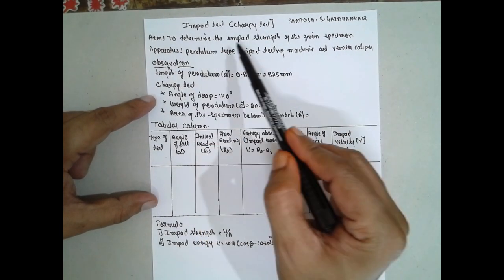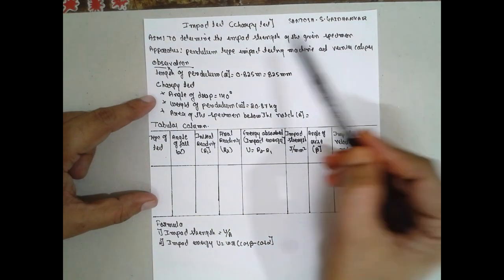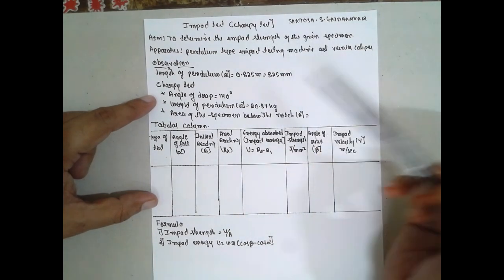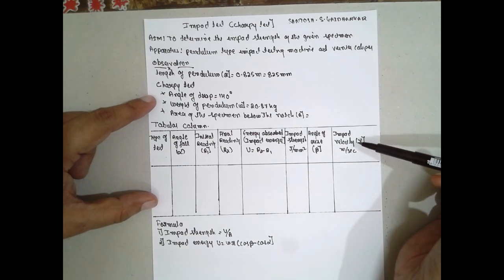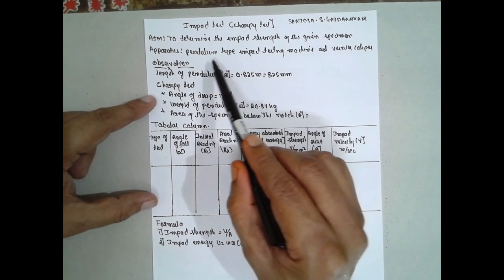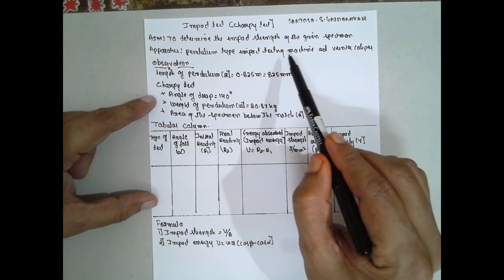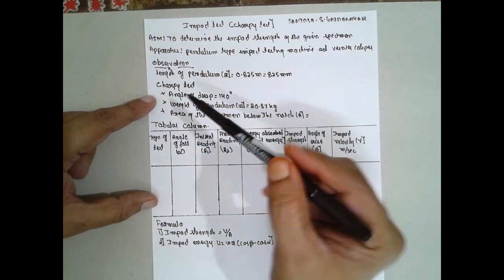The aim is to determine the impact strength of a given specimen. We also have to determine the angle of rise and impact velocity. The apparatus required are a pendulum type impact testing machine and a vernier caliper.